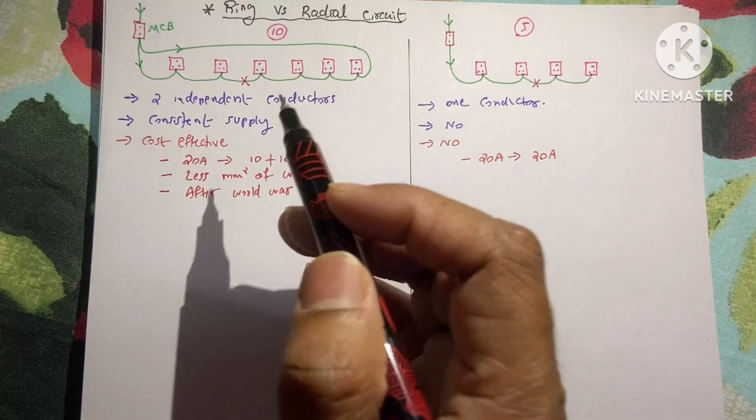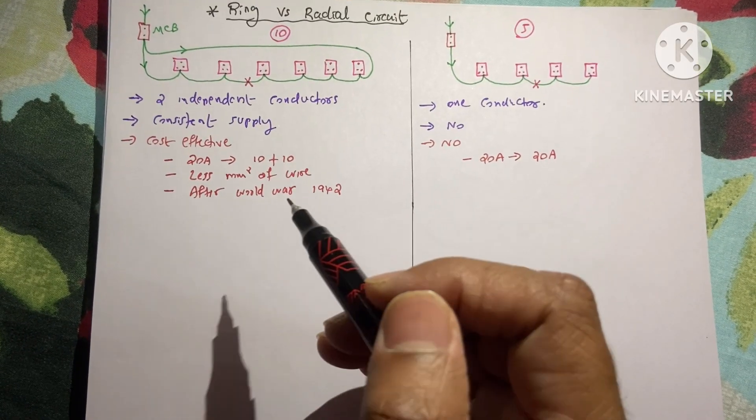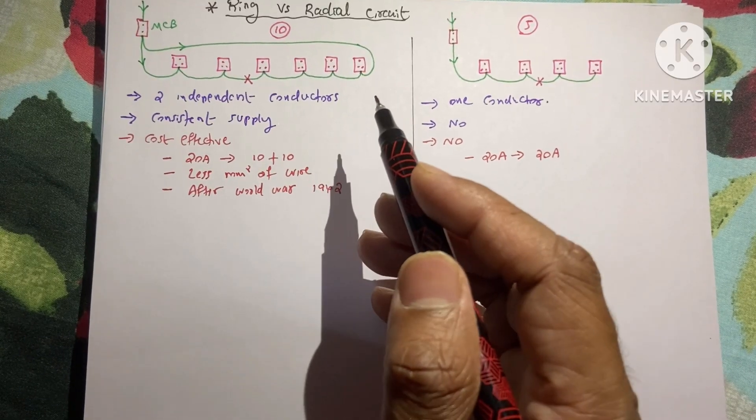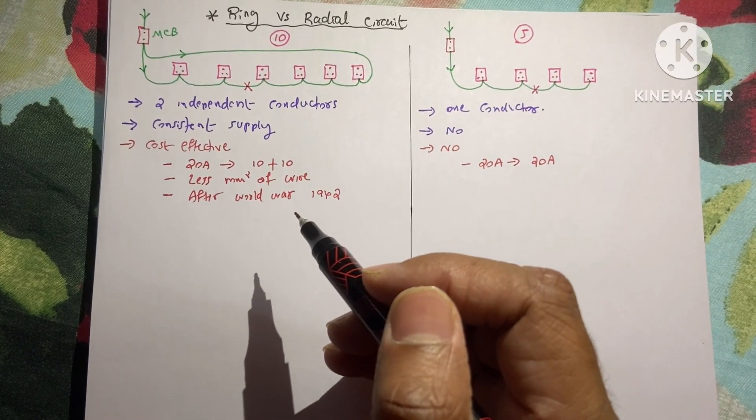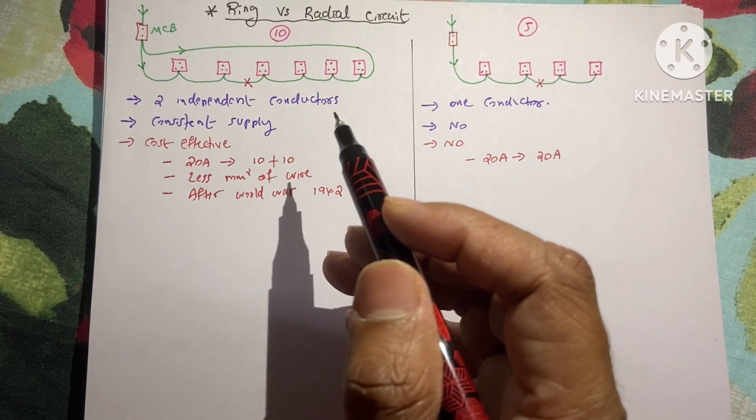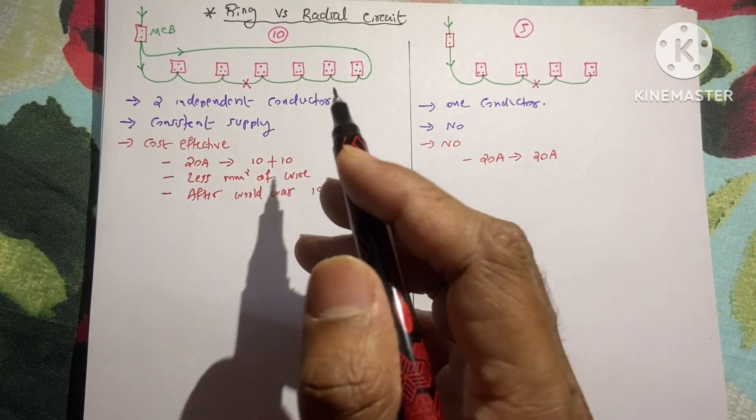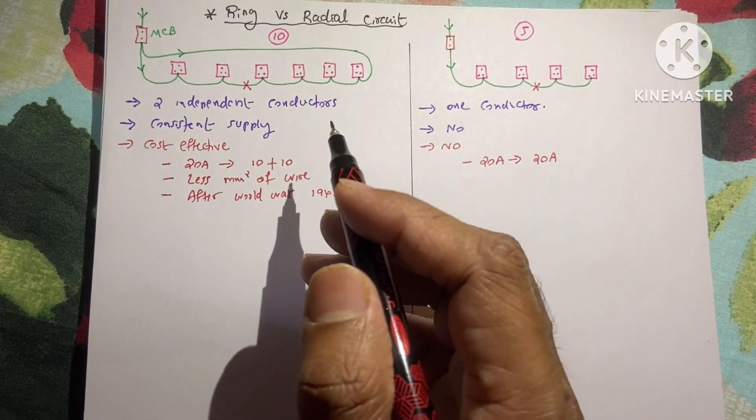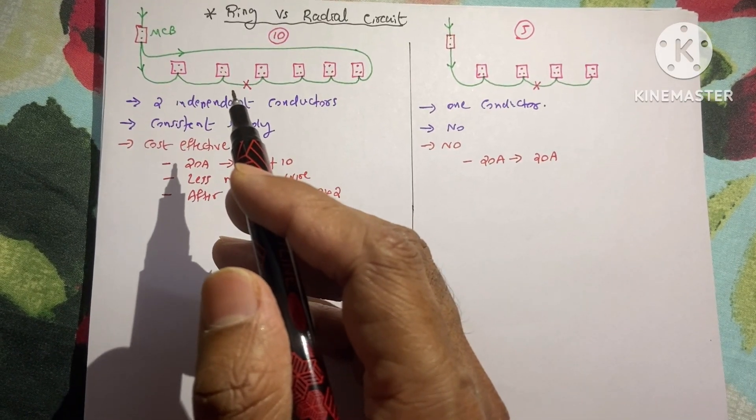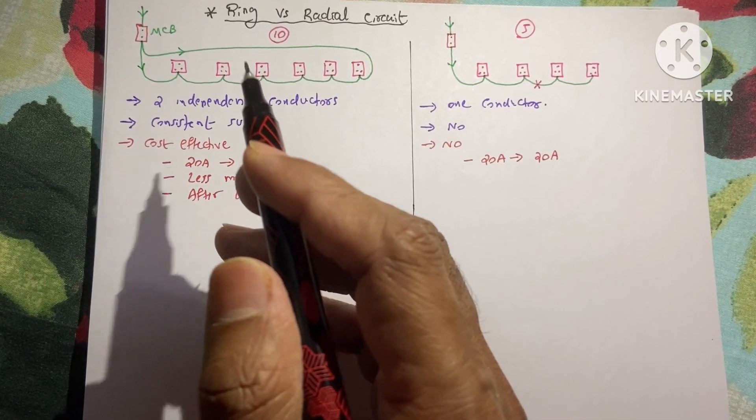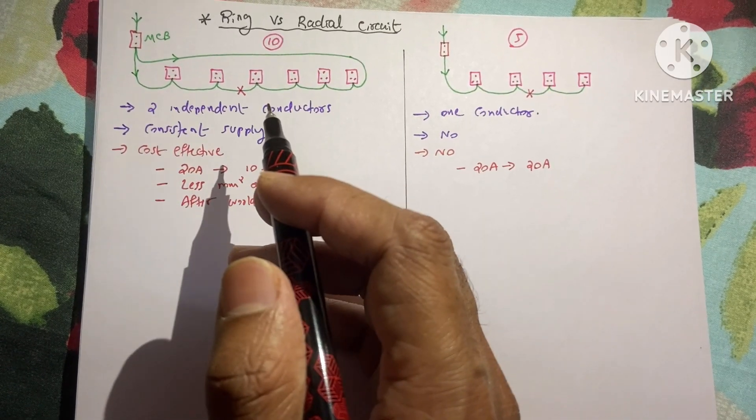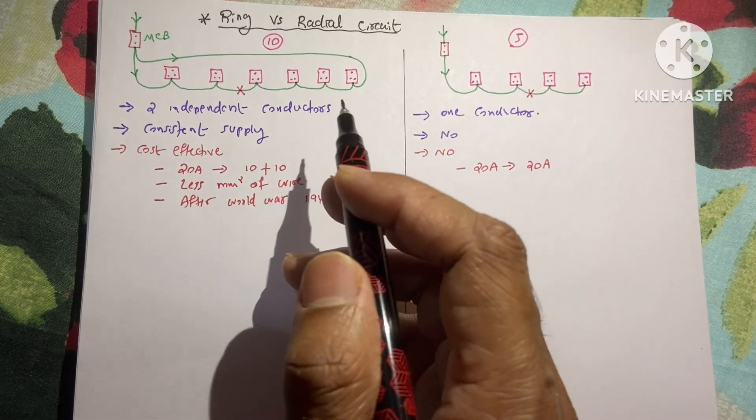Because of this reason, after the world war of 1942 the ring circuit emerged into the world. After the world war there was a huge shortage of material. So the scientists came up with this idea of ring circuit. If they could use this ring circuit then there would be a requirement of half width of wire. Through this way they could solve the shortage of material.